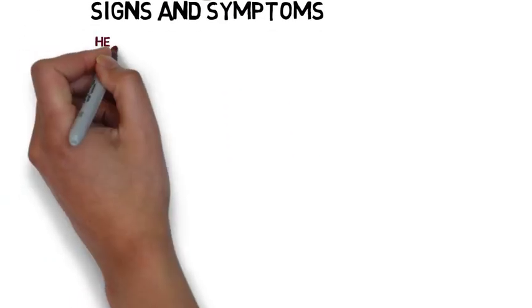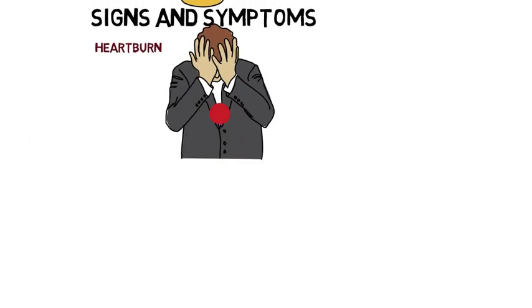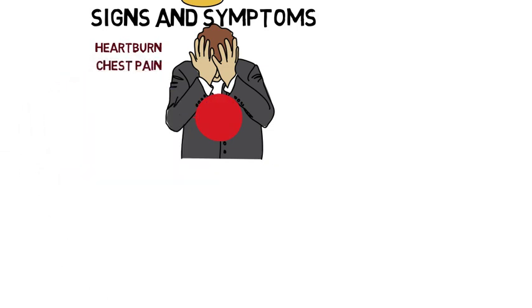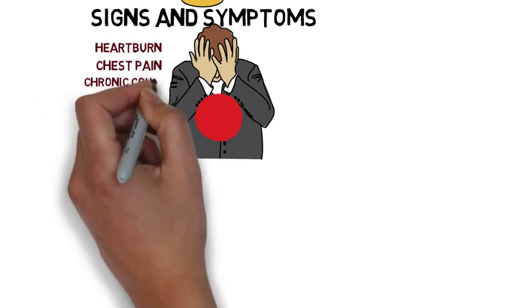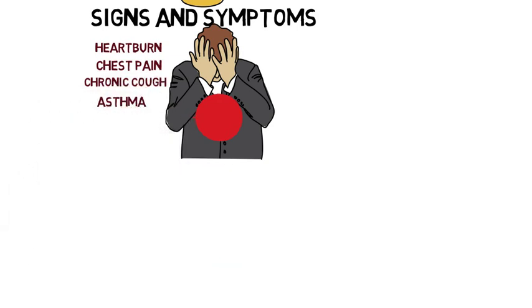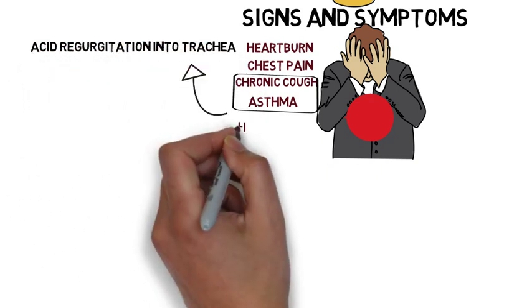Now let's discuss signs and symptoms of GERD. Number one is heartburn. The person may experience burning in the heart. Number two, the person may experience chest pain. Number three, the person may also experience chronic cough and asthma. The cause behind this chronic cough and asthma is acid regurgitation into the trachea.